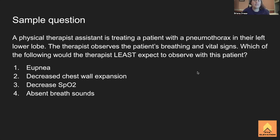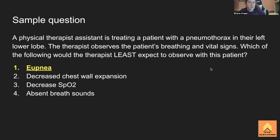Sample question: A physical therapist assistant is treating a patient with a pneumothorax in the left lower lobe. Which would the therapist least expect to observe? (1) Eupnea, (2) Decreased chest wall expansion, (3) Decreased SpO2, (4) Absent breath sounds. The answer is eupnea — normal breathing — because a patient with pneumothorax will not be breathing normally. Decreased chest wall expansion, decreased SpO2, and absent breath sounds are all expected findings.